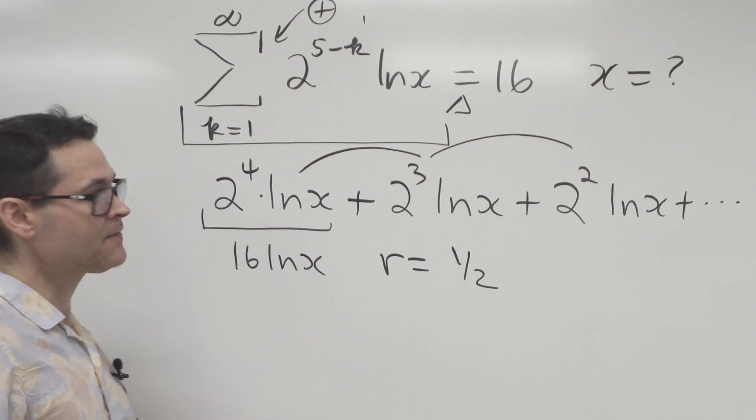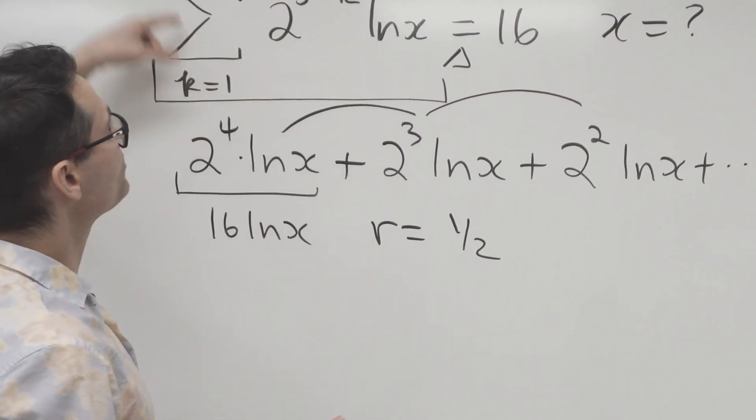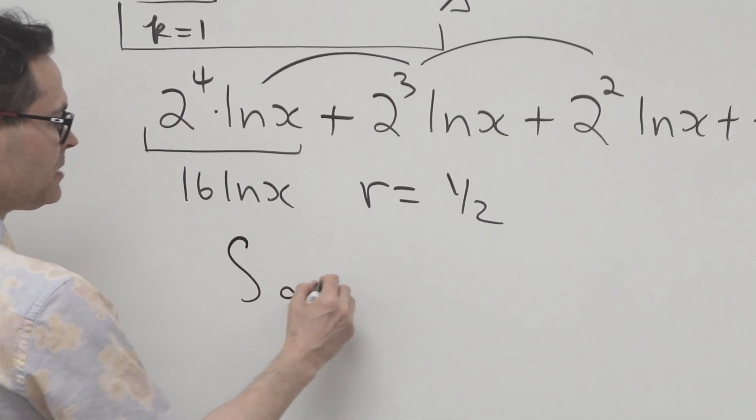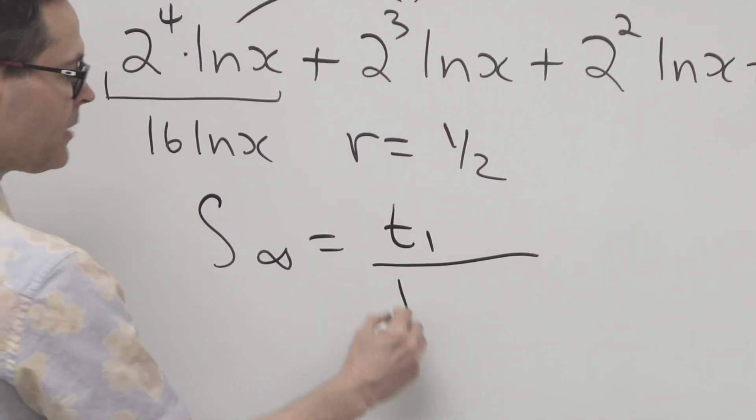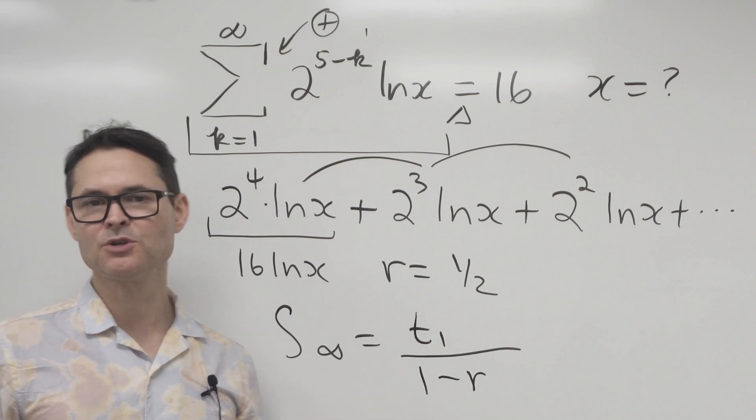Alright, well if that's the case, then this becomes pretty easy, because there's another way I can represent sigma as a formula, which is gonna be equal to the first term, T1, divided by 1 minus the common ratio. And this is a formula that often most people know.